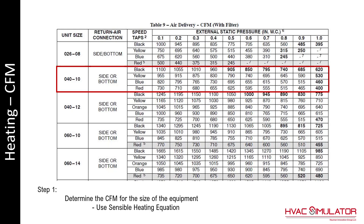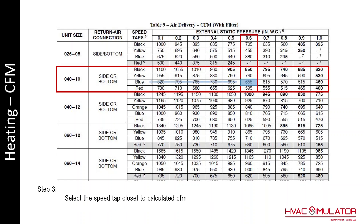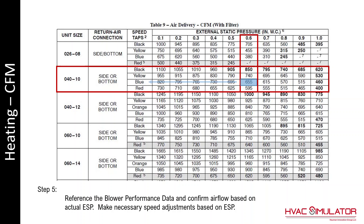In the next example, a 40,000 BTU furnace is used. The calculated value was 639 CFM, therefore 655 is the closest value. Measure the actual external static pressure and make the necessary adjustments. If the actual external static pressure was 0.5 inches of water column, then a technician would have to make a judgment call — whether to leave it on the blue speed tap or use the red speed tap. At 625 CFM, which is close to 639 CFM, either one would be a good choice.